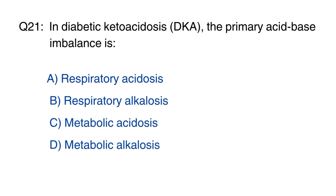Question 21: In diabetic ketoacidosis (DKA), the primary acid-base imbalance is? The right option is C, metabolic acidosis.